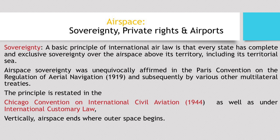The first concept is sovereignty. The basic principle of international air law is that every state has complete and exclusive sovereignty over the air space above its territory, including the territorial sea. This was affirmed by the Paris Convention on the regulation of aerial navigation in 1919 and further reaffirmed by the Chicago Convention signed in 1944.